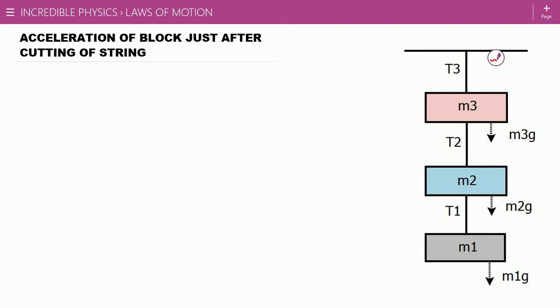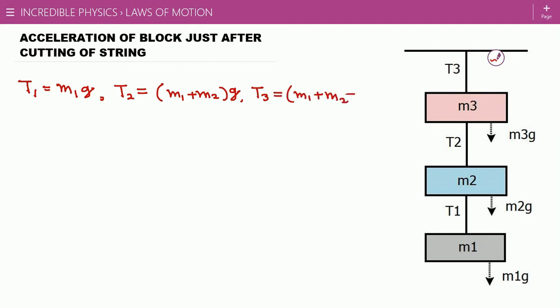Now we have to write all the values of the tensions in the strings. From the FBD of m1, the tension in string number one is T1, which equals m1g. Tension T2 acting on m2 in the upward direction equals the total downward external force, which is m2g and m3g — the tension between m1 and m2 is internal — so T2 equals (m1 + m2)g. T3 equals (m1 + m2 + m3)g. These are the initial tensions before cutting any string.